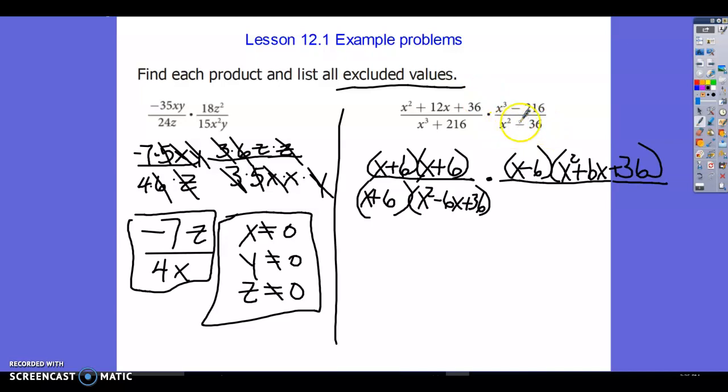Difference of squares. So again, same binomial, different sign in the middle. So I'm going to have x plus 6 and x minus 6.